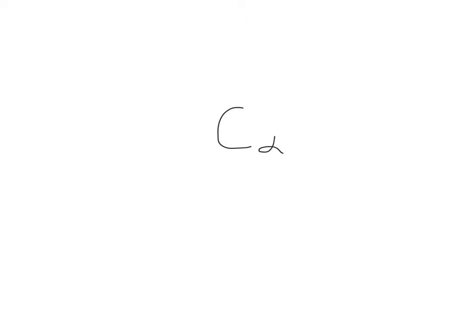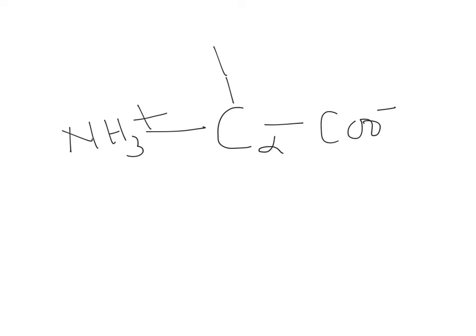Each of those 20 standard amino acids will follow one common structure: they have an alpha carbon in the center, a carboxylate group, an amino group (NH3+), a hydrogen, and a side chain denoted as the R group.